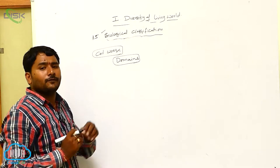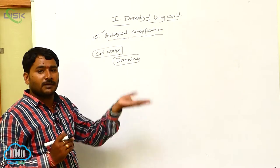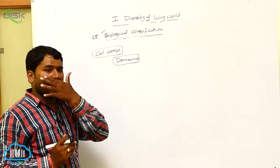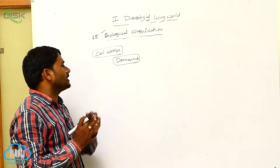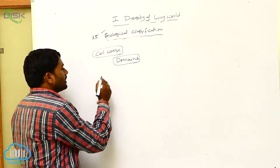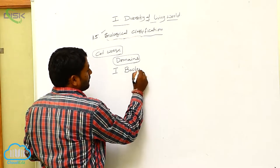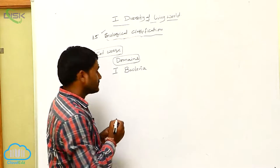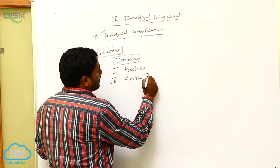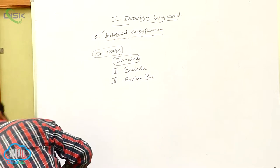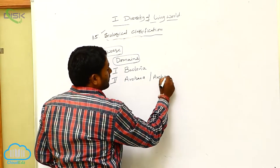As per Carl Woese, a few organisms placed in the prokaryotes or Monera are not similar with the prokaryotes but similar with the eukaryotes. That is why they were separated and kept in a separate domain. There are three domains: the first one is Bacteria, the second one is Archaebacteria, also called Archaea or Archaebacteria.